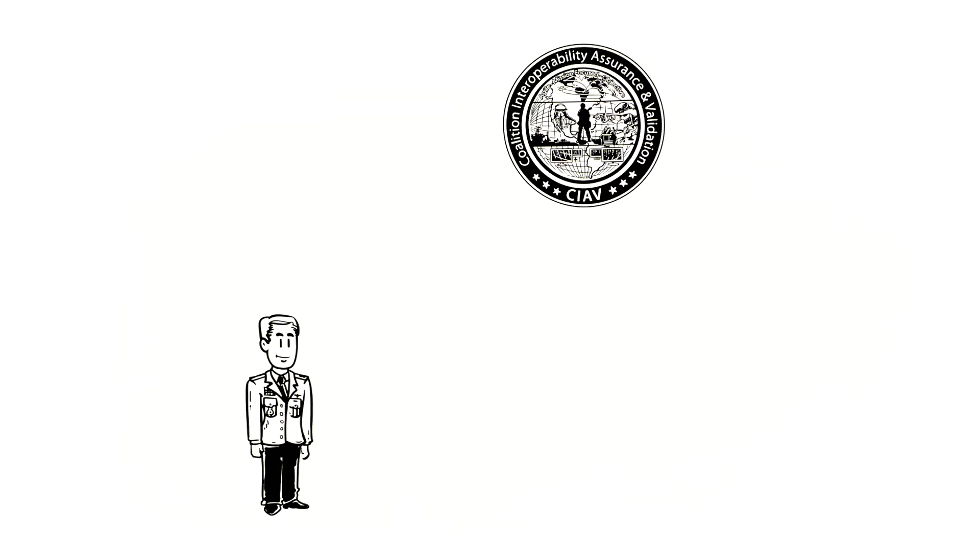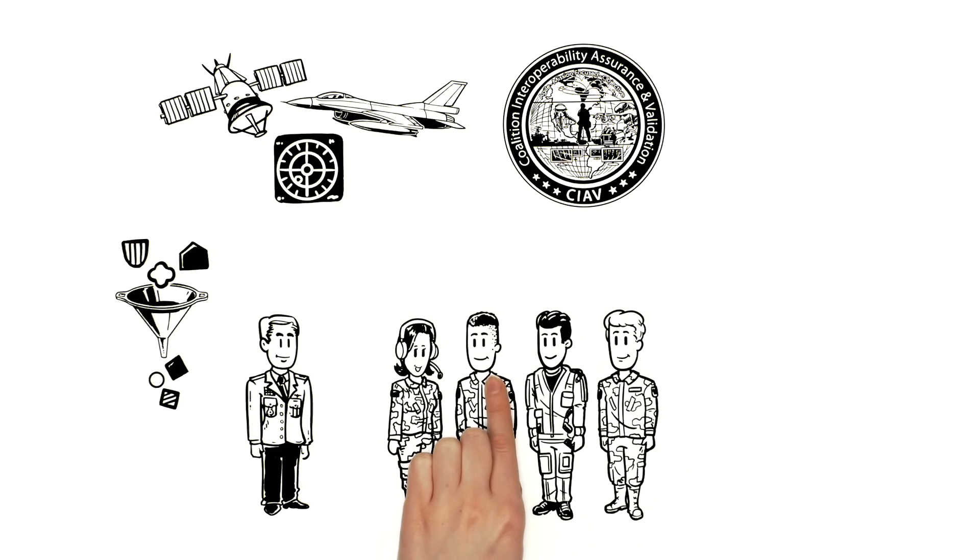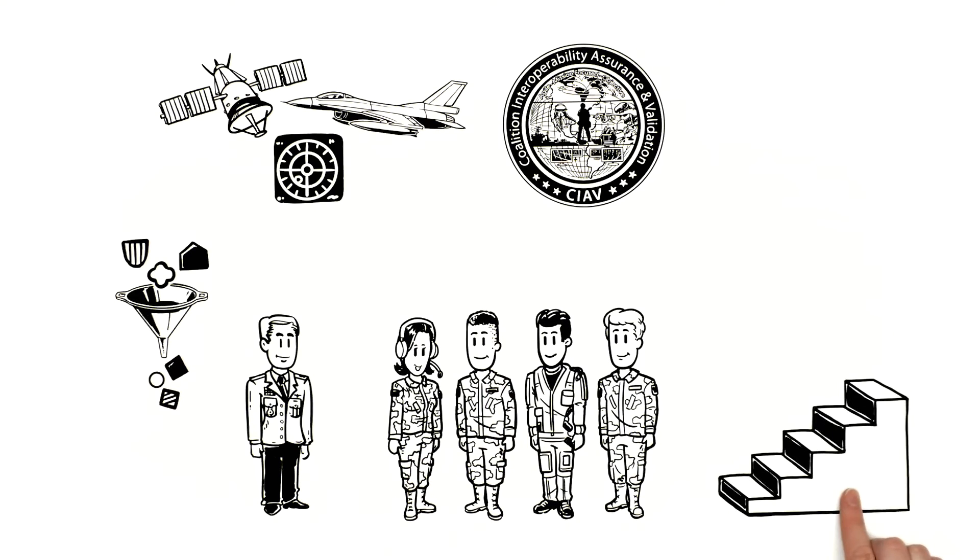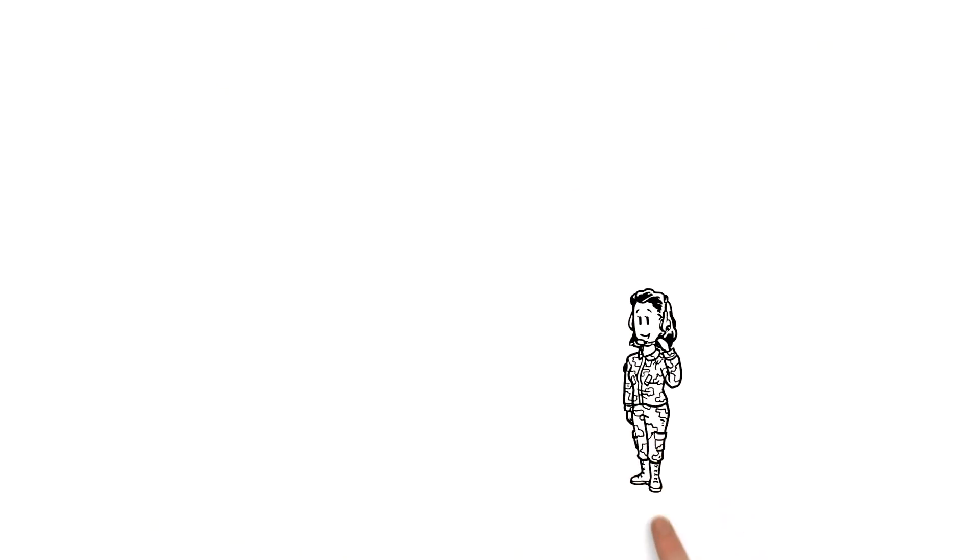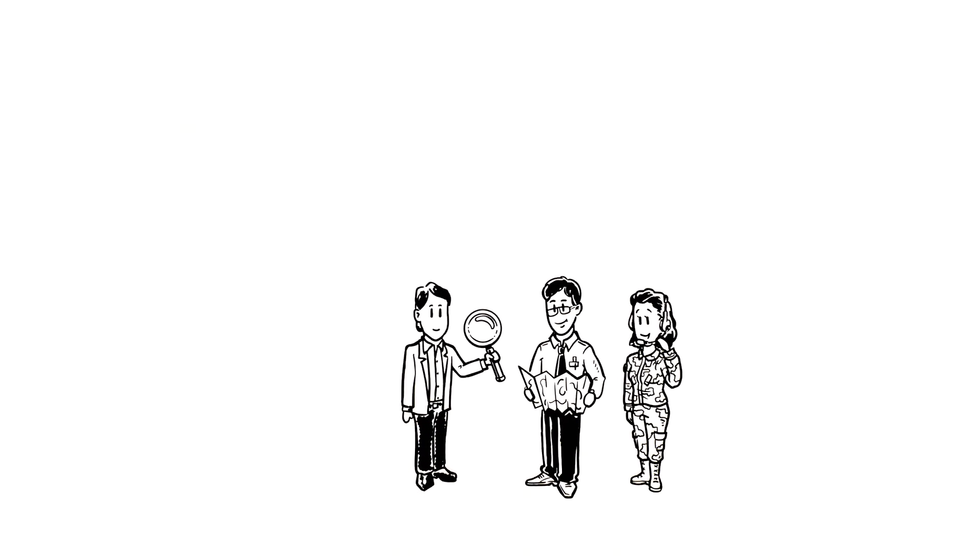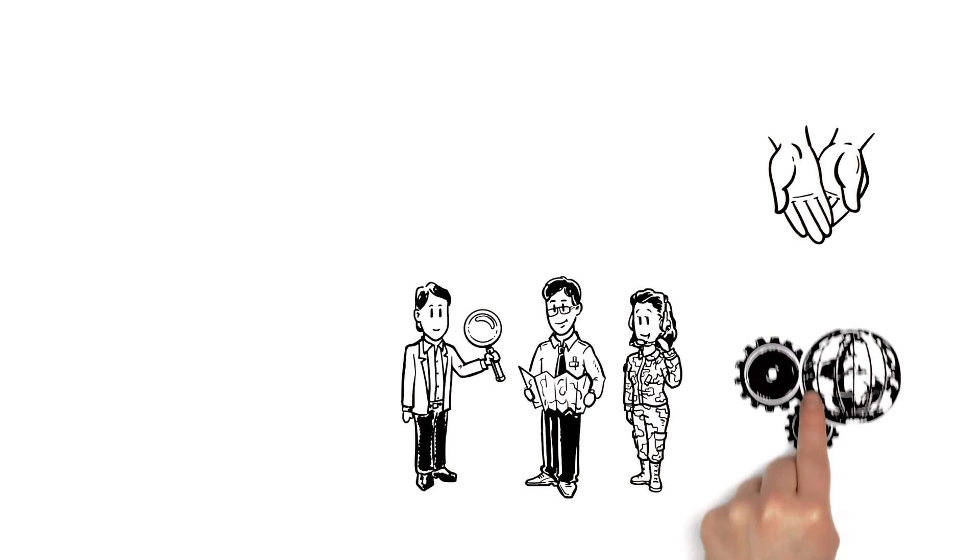When John identifies an information sharing gap at any operational level, his team will address the problem and escalate those issues that go beyond field-level knowledge. If the problem persists, John elects to engage KIEV. The KIEV team of operational subject matter experts, engineers and analysts are represented by nations contributing to the coalition operation.